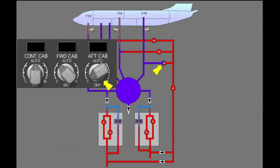Because the packs supply air at the temperature of the coldest zone, that zone does not need trim air and the related trim air valve is closed. The controllers use trim air modulating valves to increase the temperature in the other zones to the necessary temperature.